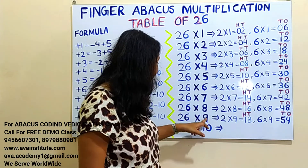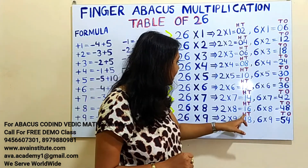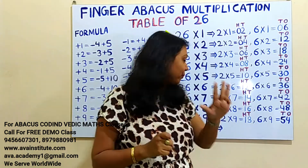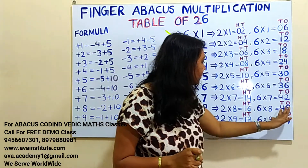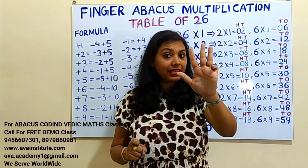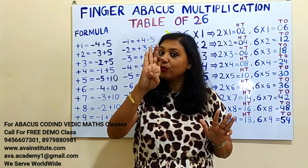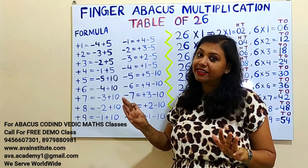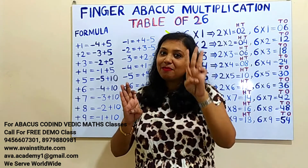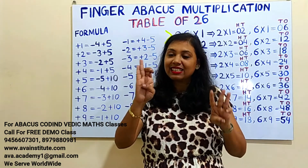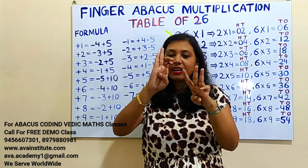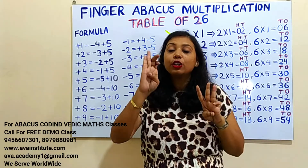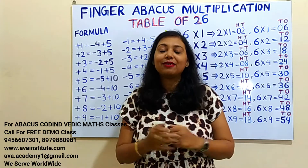26 nines are: 2 nines are 18 — in hundreds 1, in tens 8. Now 6 nines are 54 — in tens 50, in ones 4. We can add 4 easily. How to add 50? Plus 5 formula is minus 5 plus 10, so plus 50 formula is minus 50 plus 100. Hundreds: 100, 200. Tens: 10, 20, 30 — 30. Ones: 1, 2, 3, 4. The answer is 234.